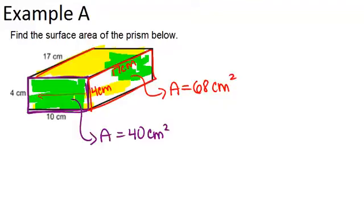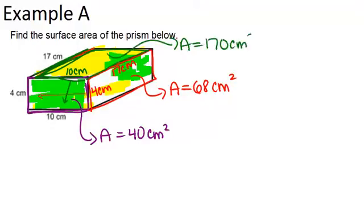And last, let's look at the area of the face on top, which has dimensions that are 17, and right here is 10, because it has to match the edge over there. So we want to do 17 times 10 to get 170 centimeters squared.